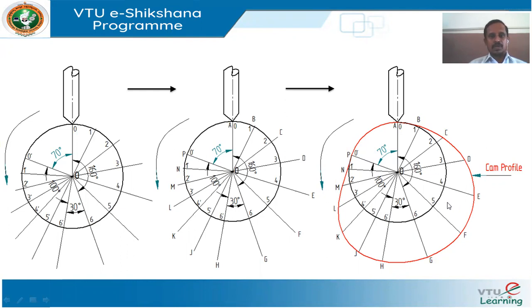Make sure the axis of the follower passes through the axis of the camshaft. When this cam rotates counter-clockwise, the first 160 degrees of rotation rises the follower from BDC to TDC. The next 30 degrees (first dwell) keeps the follower at TDC. The next 100 degrees lowers the follower from TDC to BDC. During the second dwell period of 70 degrees, the cam keeps the follower stable at BDC. Like this, the relative motion takes place between cam and follower.